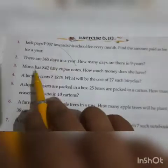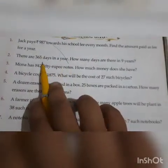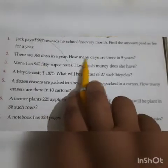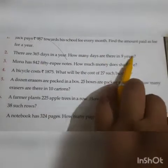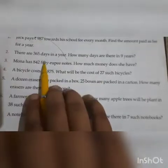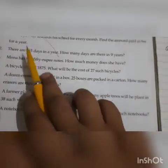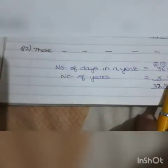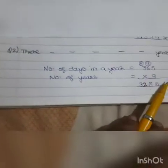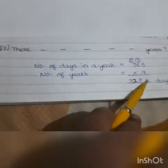Question number 2: There are 365 days in a year. How many days are there in 9 years? Ek year mein 365 days hote hain. 9 years mein kitne days hote hain — hum 9 × 365 karenge. Number of days in a year = 365, number of years = 9, so we find total number of days by multiplying them.